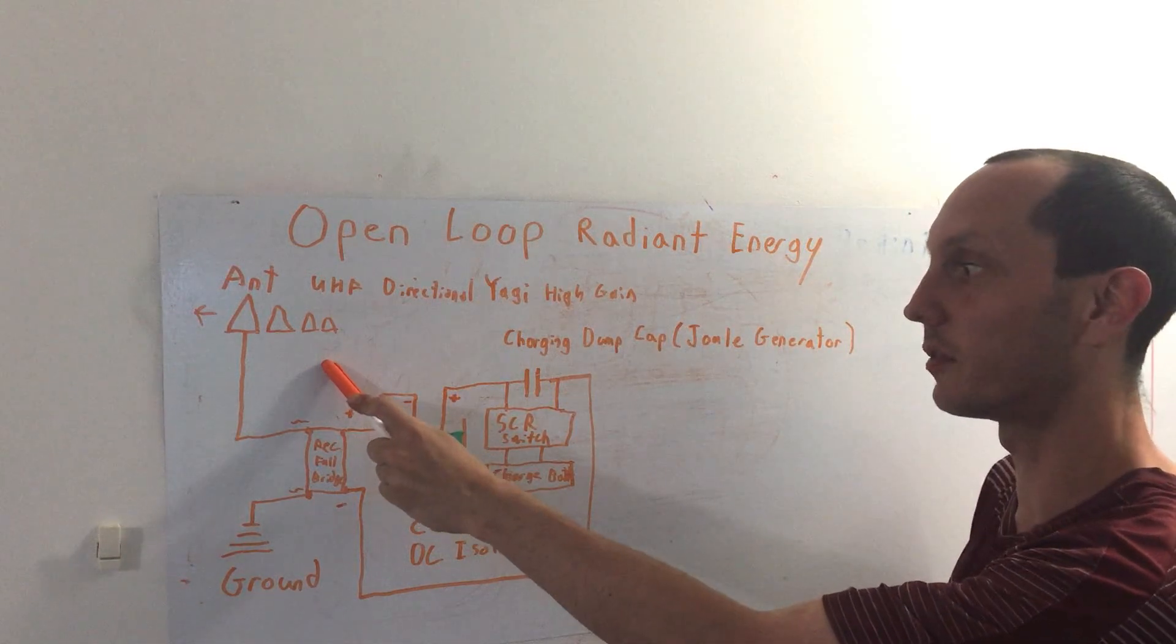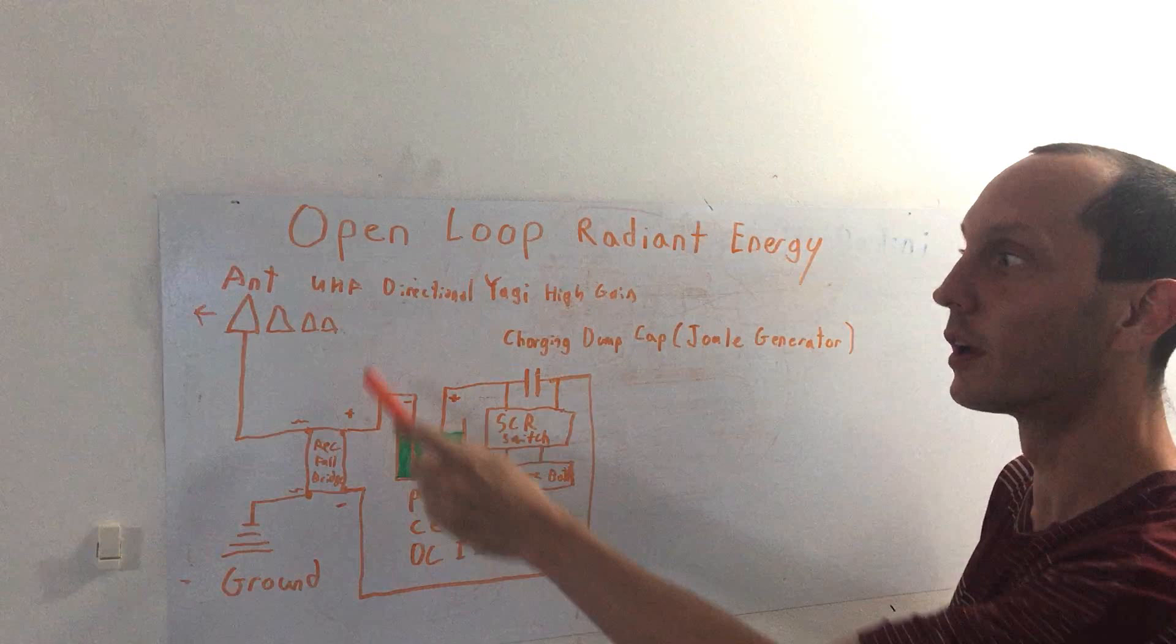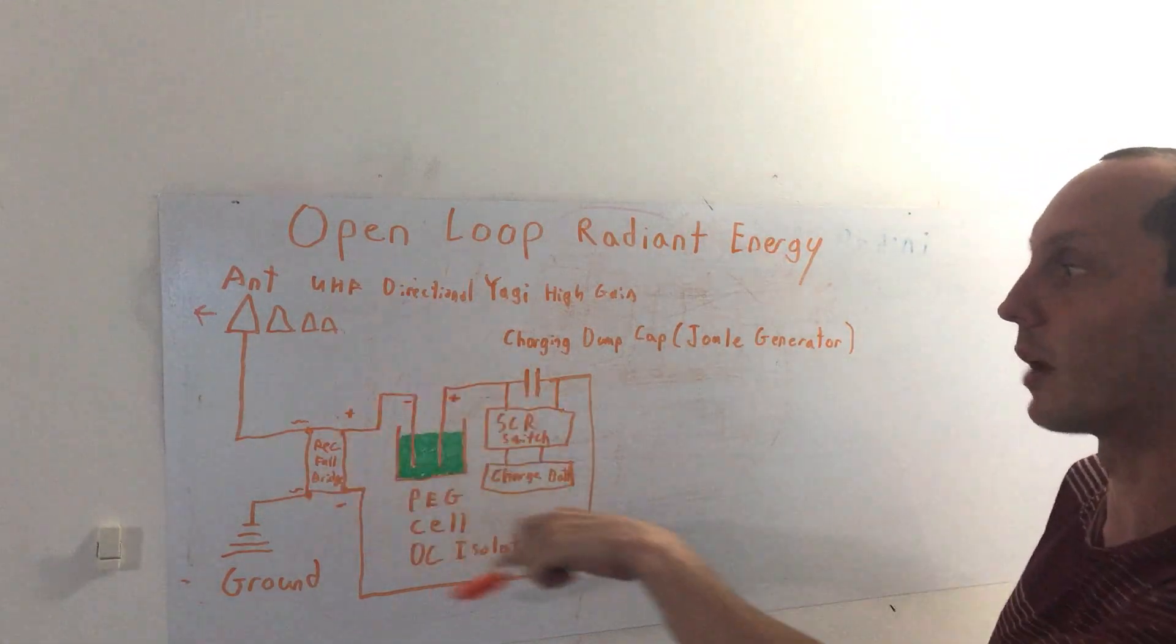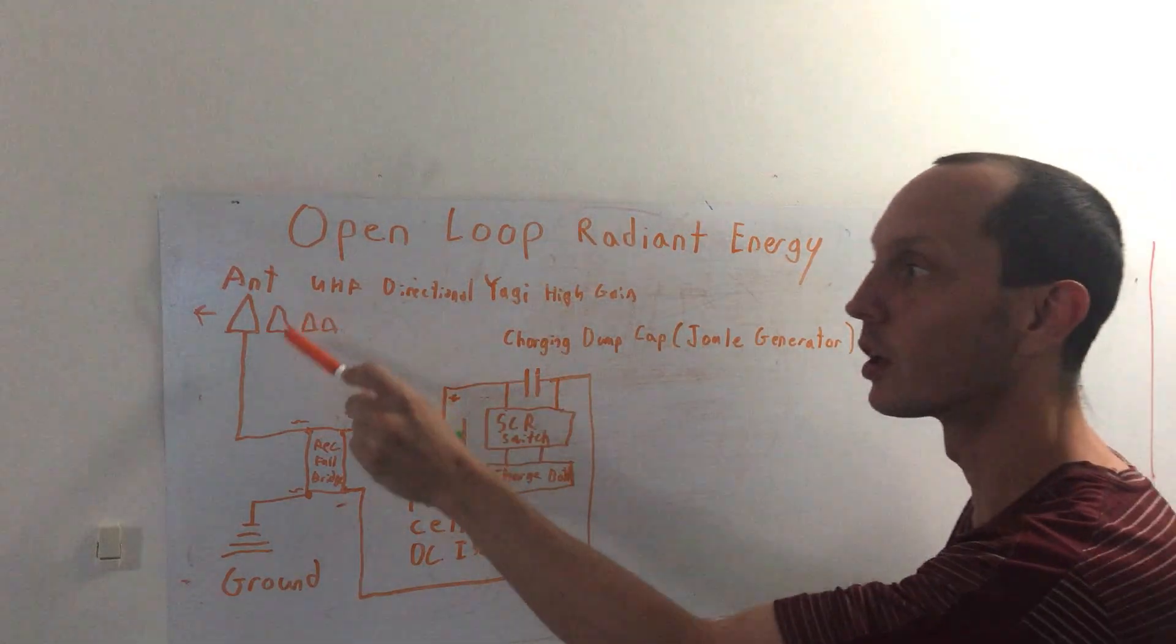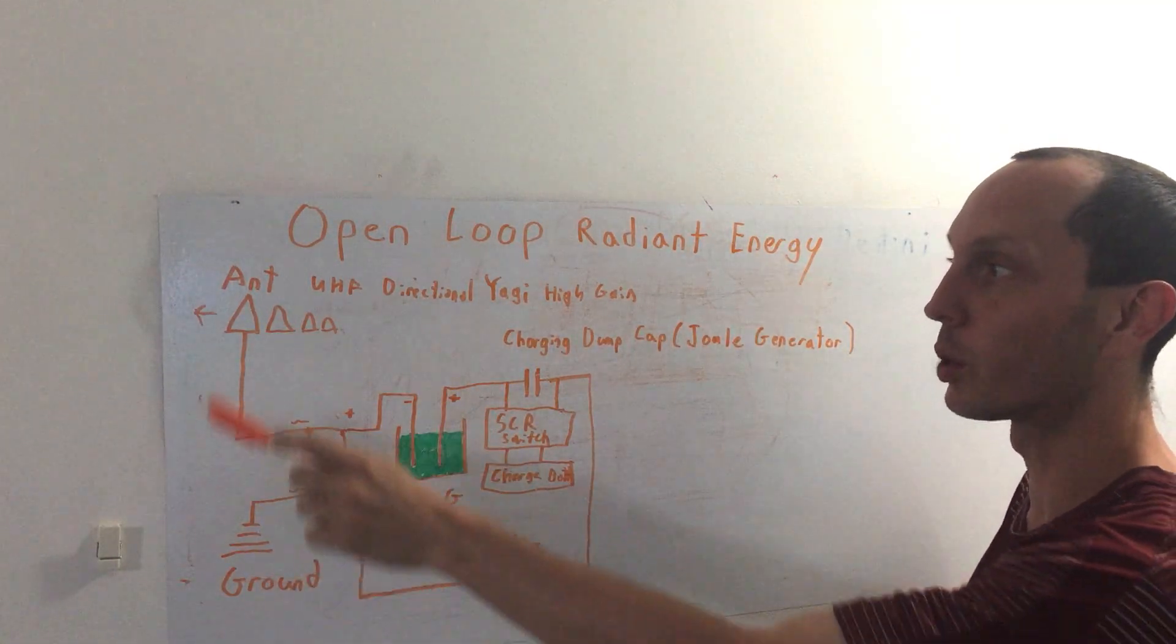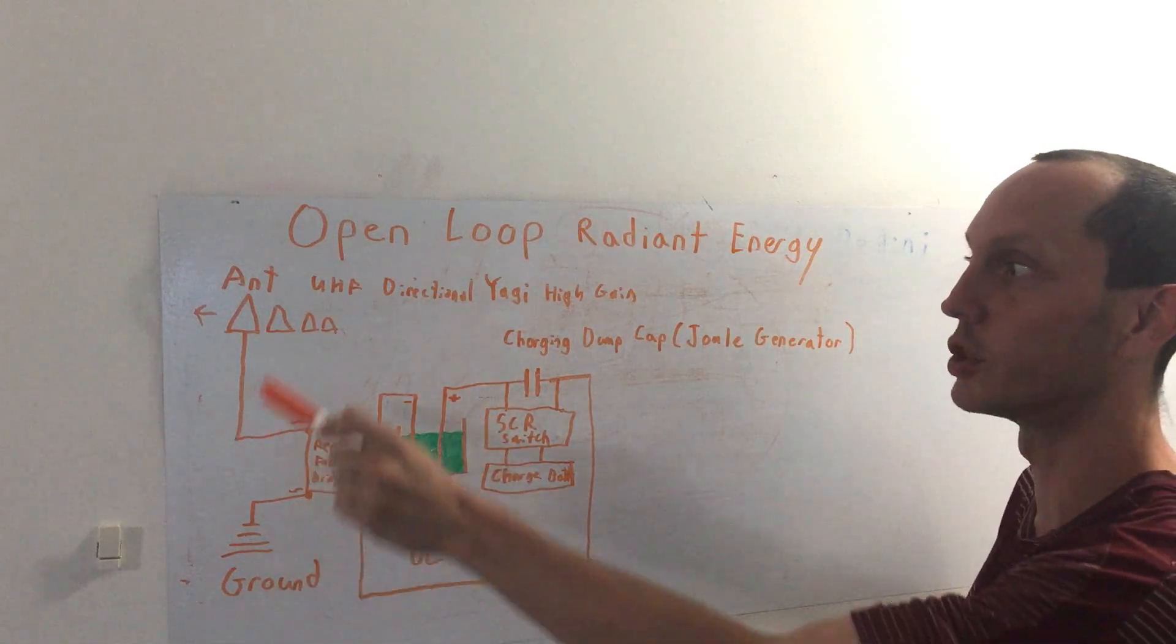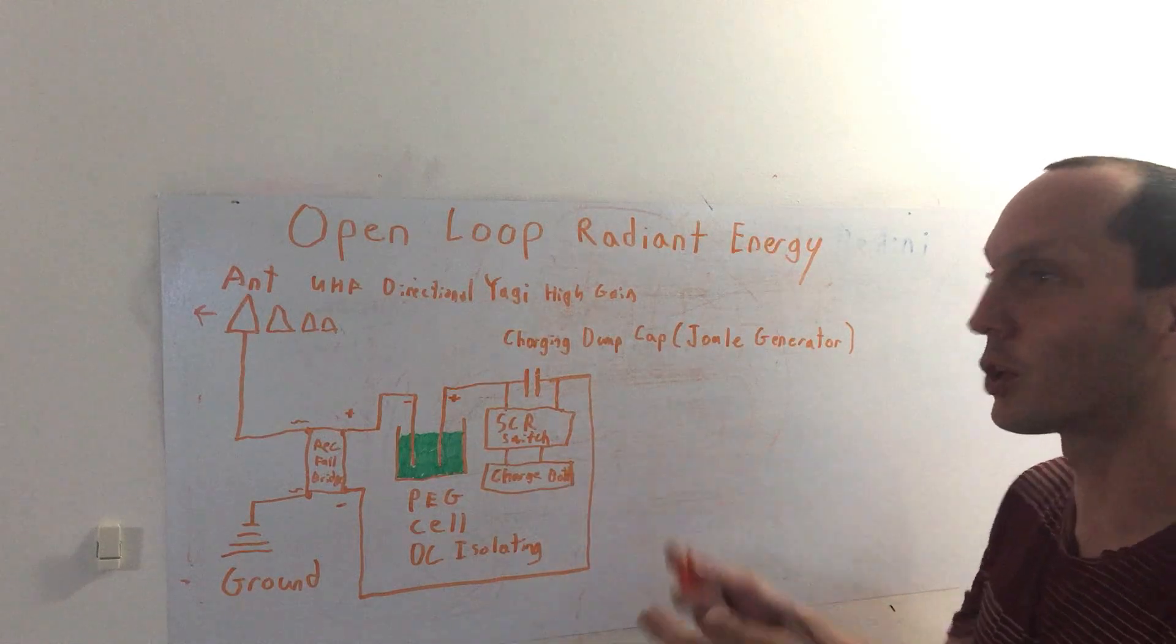You're getting 48 volts plus whatever your PEG cell is giving, one volt. So let's say 50 volts now you have of pure potential. And the charging mechanism won't kill the dipole like it normally would when everyone traditionally tries to run this energy harvest thing through a closed loop.